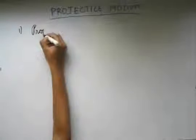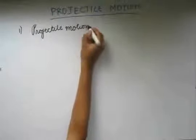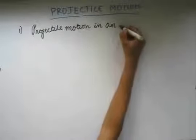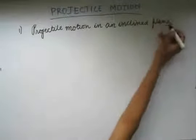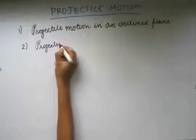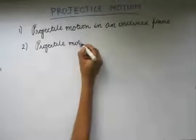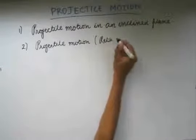Till now we have covered projectile motion from a horizontal surface and projectile motion from a height. The next two topics which we are left with are: the first one is projectile motion in an inclined plane, and the second one is projectile motion — or rather relative motion — in the case of projectiles.